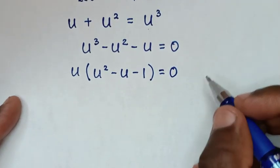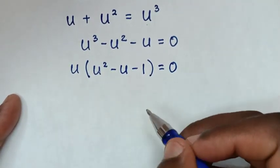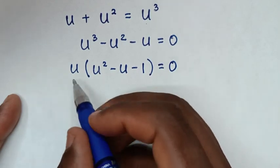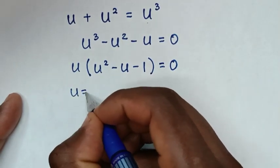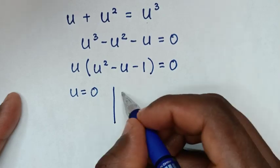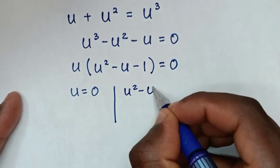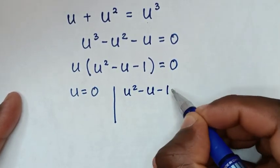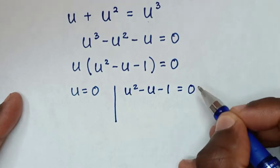From here we have two solutions: the first solution is u is equal to 0, and the second solution is u squared minus u minus 1 is equal to 0.